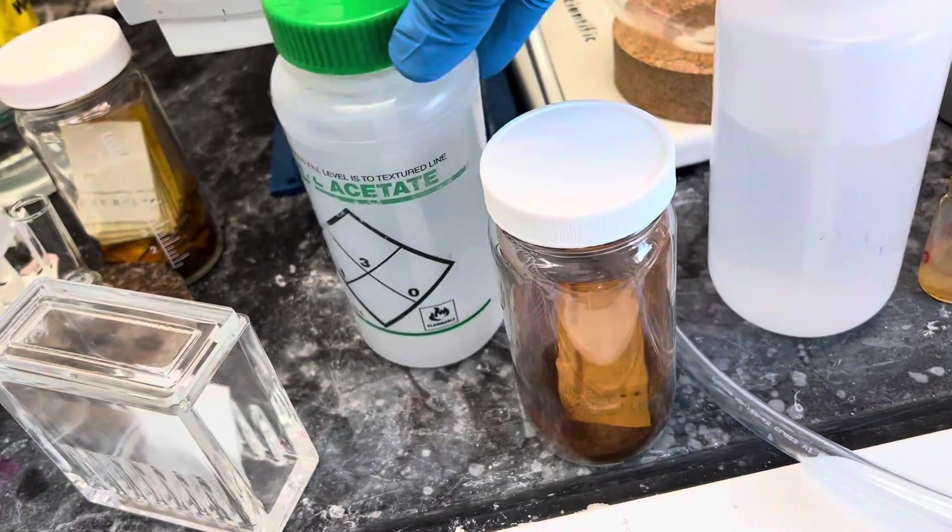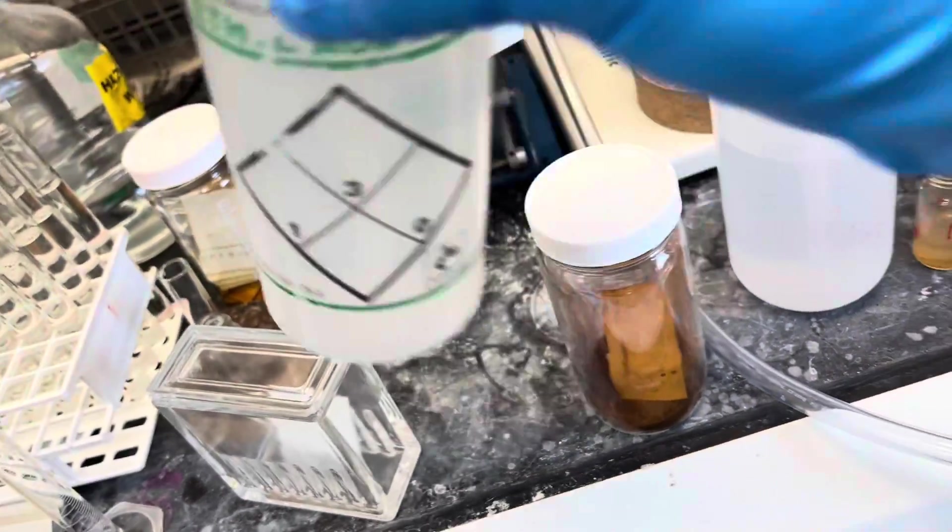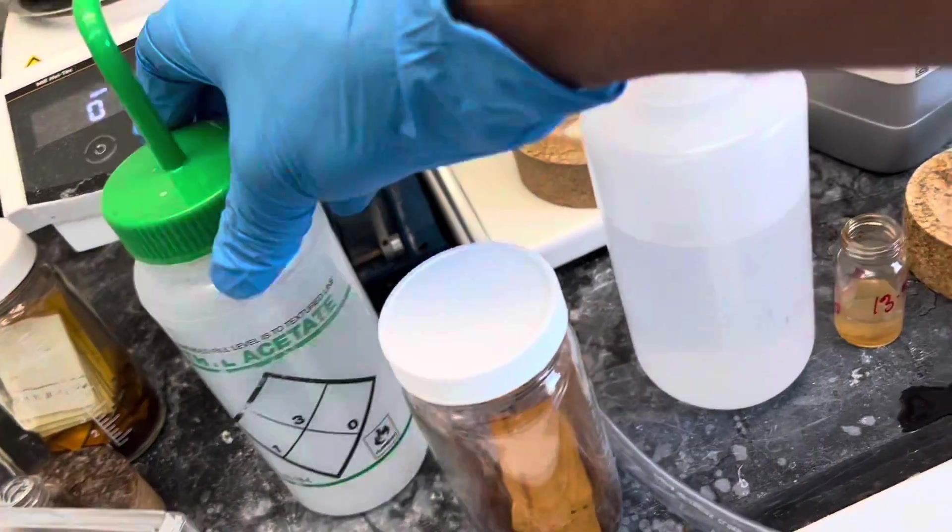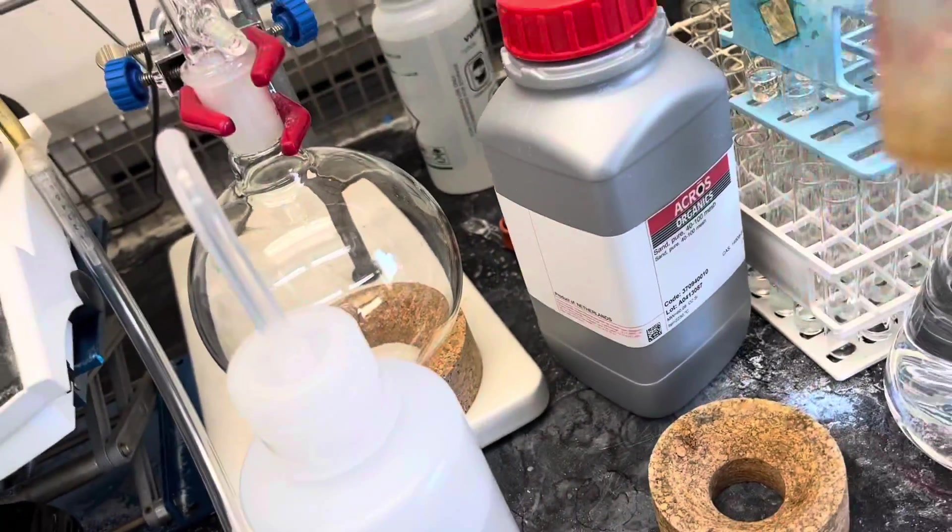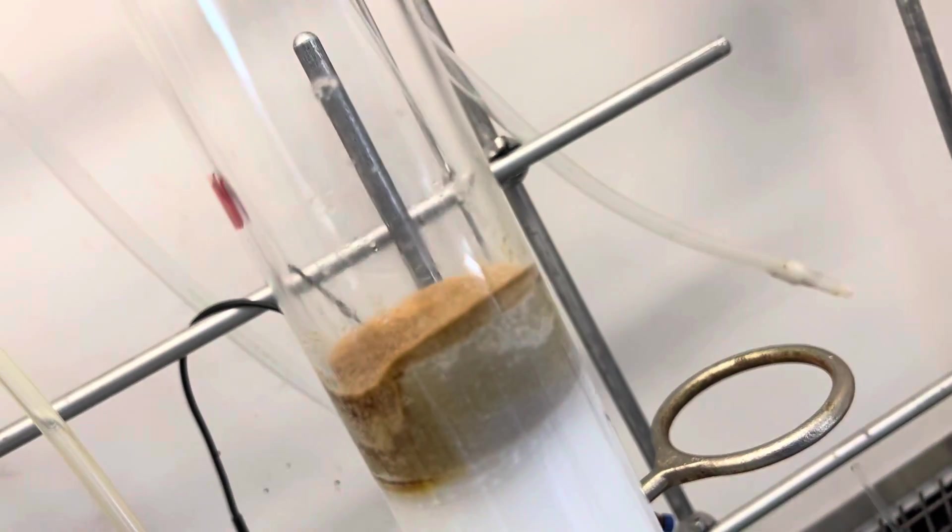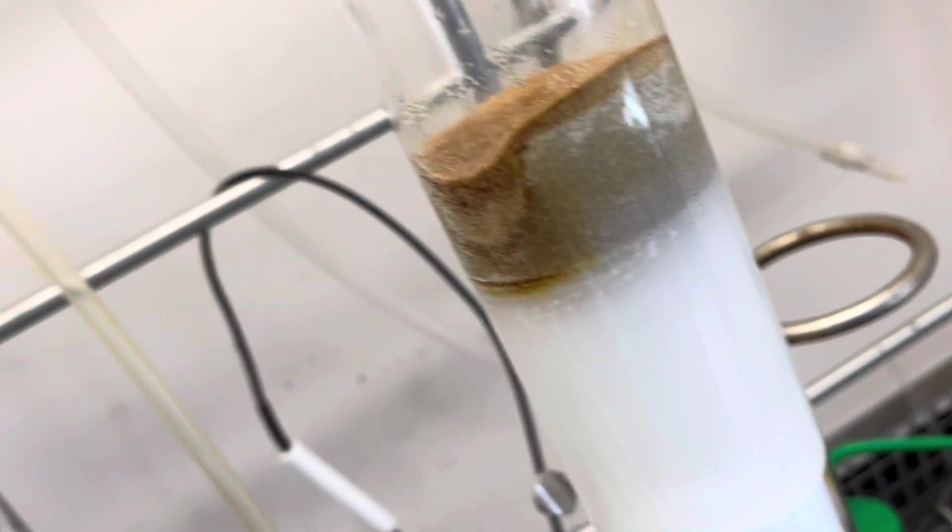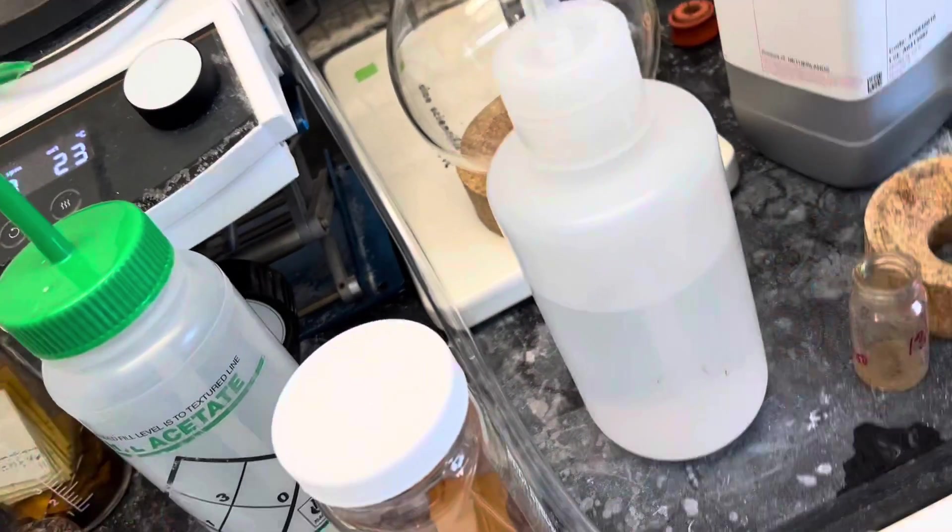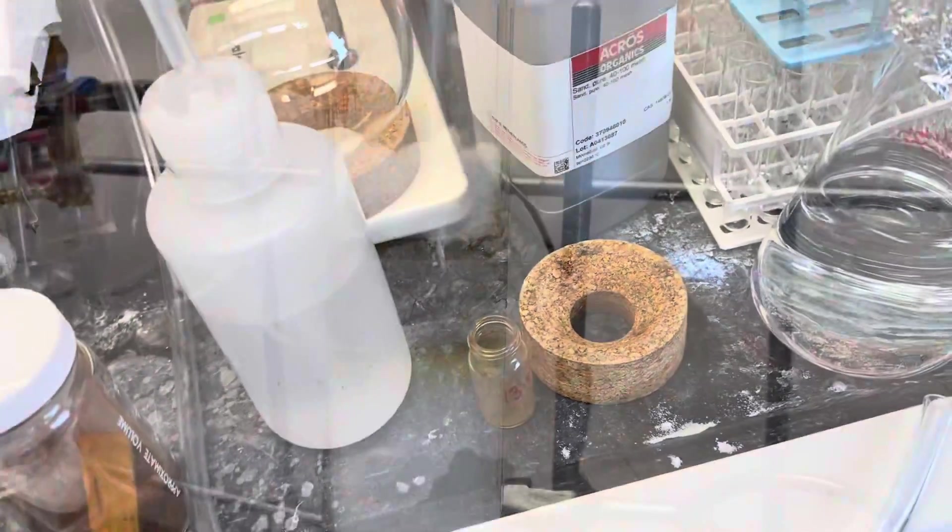I am adding a little bit of ethyl acetate in the vial so that all of the sample get dissolved. Now I'm swirling and pouring it again. Once I'm done with the loading of the sample then I will add a layer of cotton on top of the silica and sand.